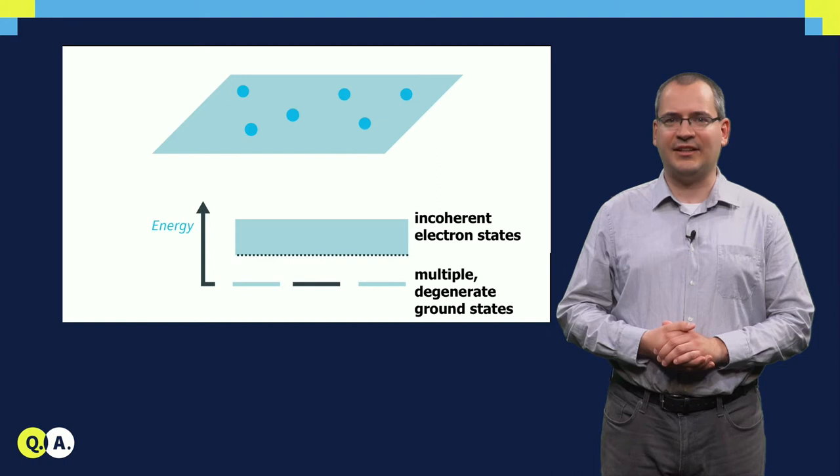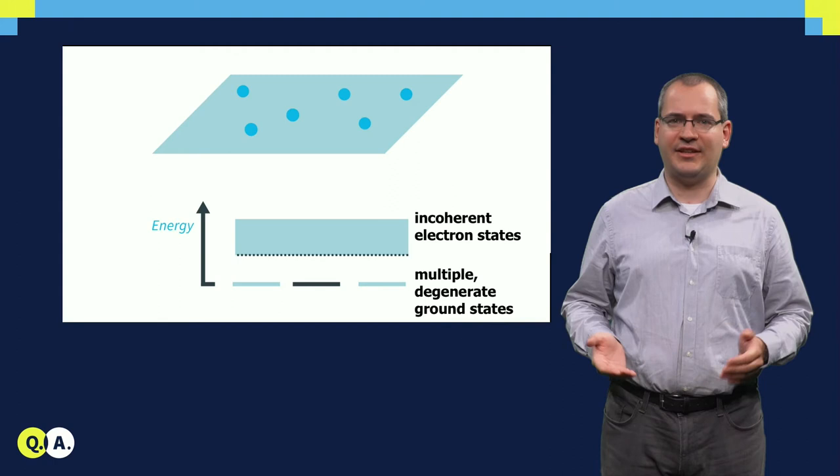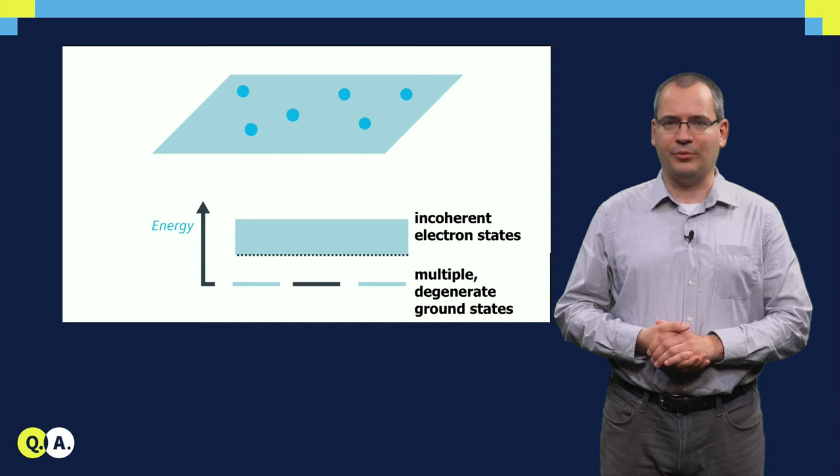Since it is in its ground state, it cannot lose energy to its environment. It also cannot gain energy from its environment because of the energy gap above the ground state. We created a qubit, which is protected from noise or thermal fluctuations from its environment as long as those are smaller than the energy gap.